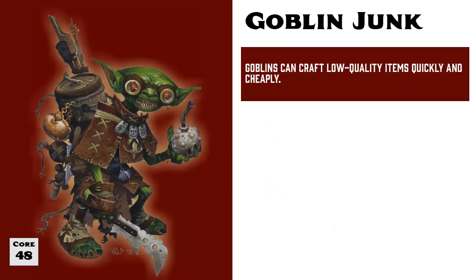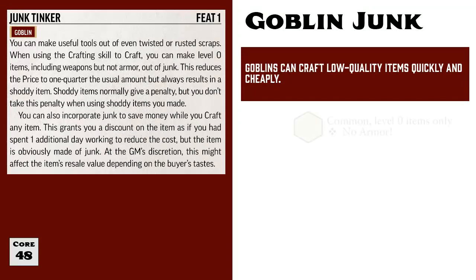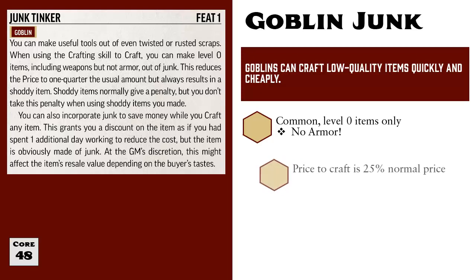Another interesting twist to crafting is that goblins can take the Junk Tinker feat to save a little bit of time or a little bit of money. This feat lets goblins craft level zero items other than armor, and they make it out of whatever junk happens to be lying around. When doing so, the price of the item being crafted is reduced to one quarter of its normal price, but if successful, the result is always shoddy.